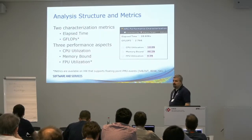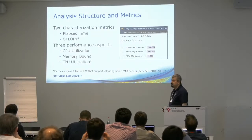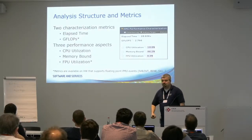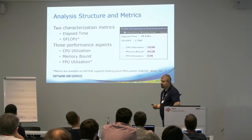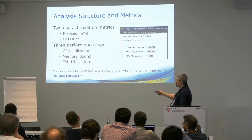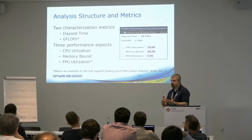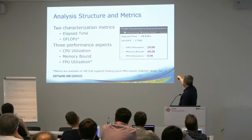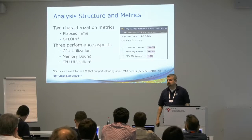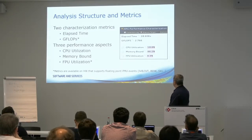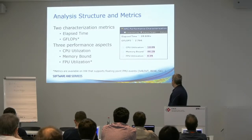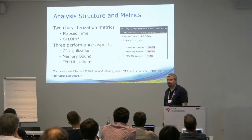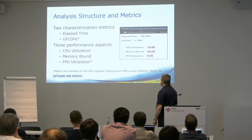Three performance aspects are reported: CPU utilization — how well you utilize the individual cores of your system; if your application is memory bound — the memory boundness as a percentage; and FPU utilization — some indication whether or not you're using the FPU well. This looks like: 20% CPU utilization, 50% memory bound, FPU utilization 4%. Sounds like a typical sparse code, like a CFD solution on a sparse grid.